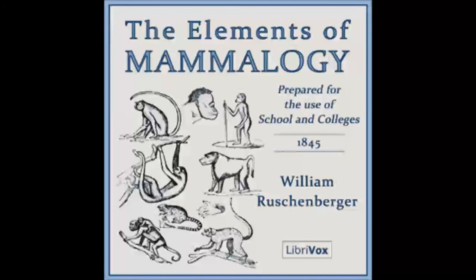By the assistance of zoological classification, we are enabled to assign to an animal the name which belongs to it, in the same manner as we are enabled to find a person we seek by knowing the direction of his residence. In the latter case, we first inquire his country, then the state, the county, the town, the street, the house, and finally the room in which he dwells. And in the first case, we ask to what grand division of the animal kingdom does the species under consideration belong, then to what class, what order, what family, and to what genus it must be assigned.